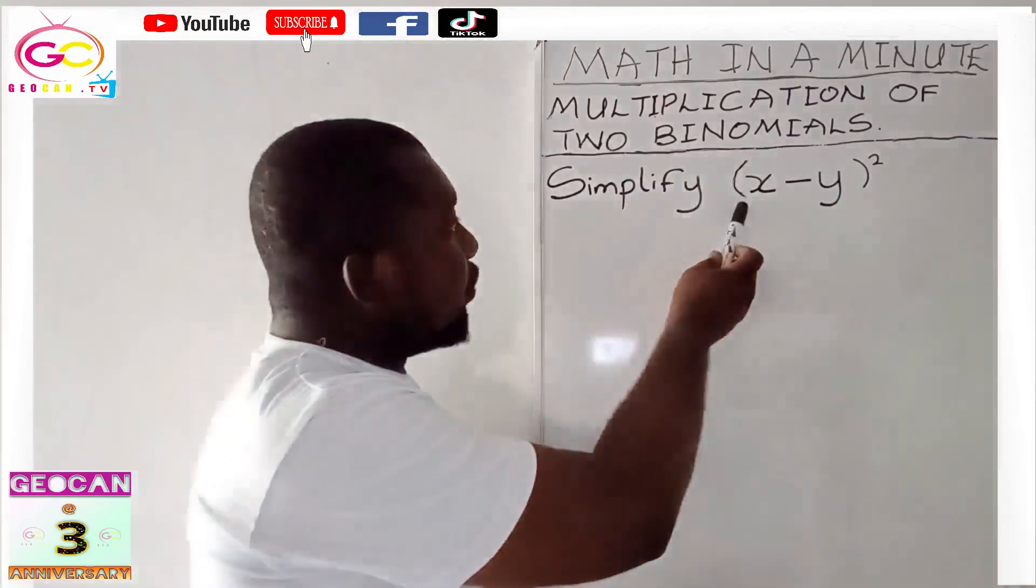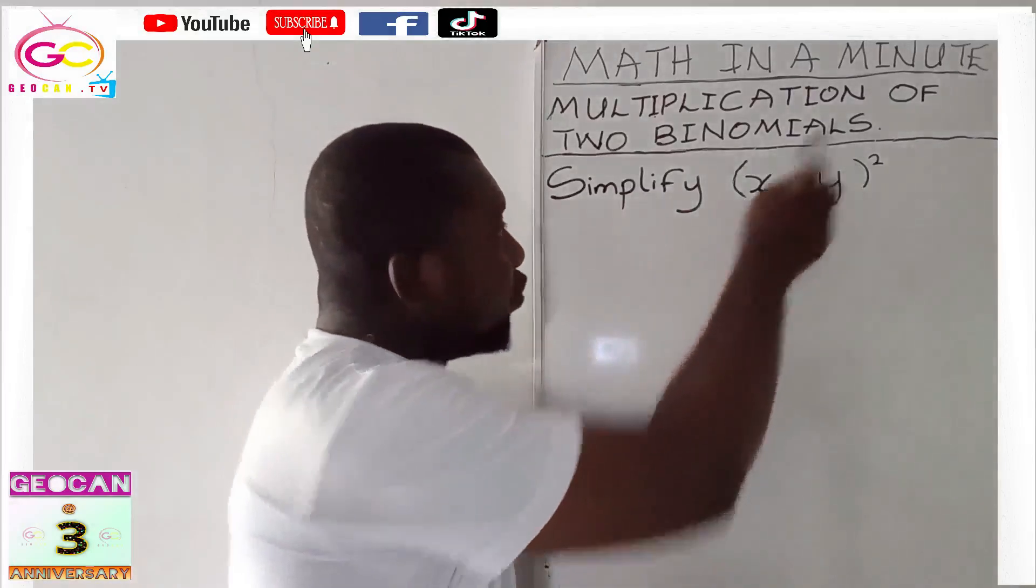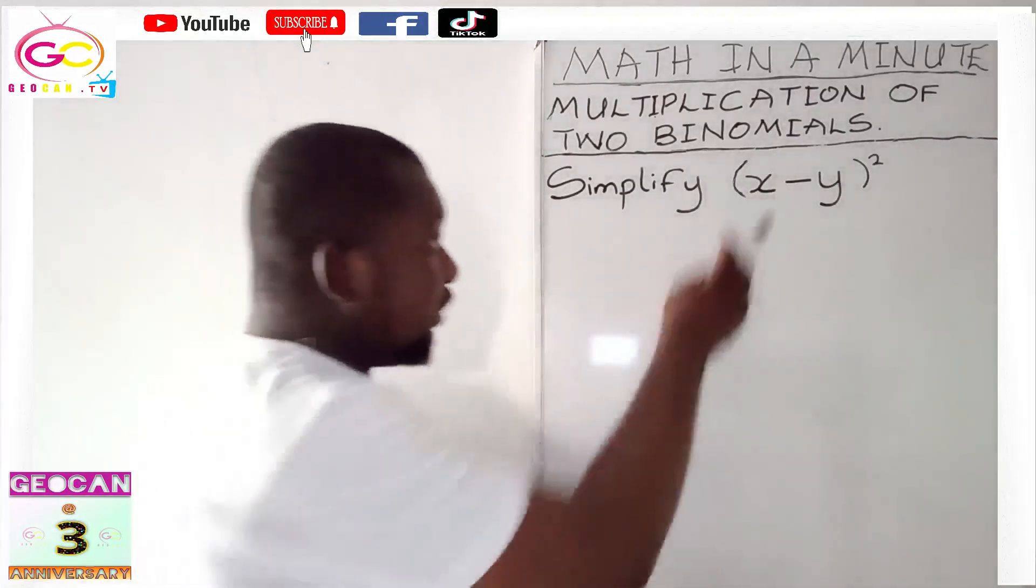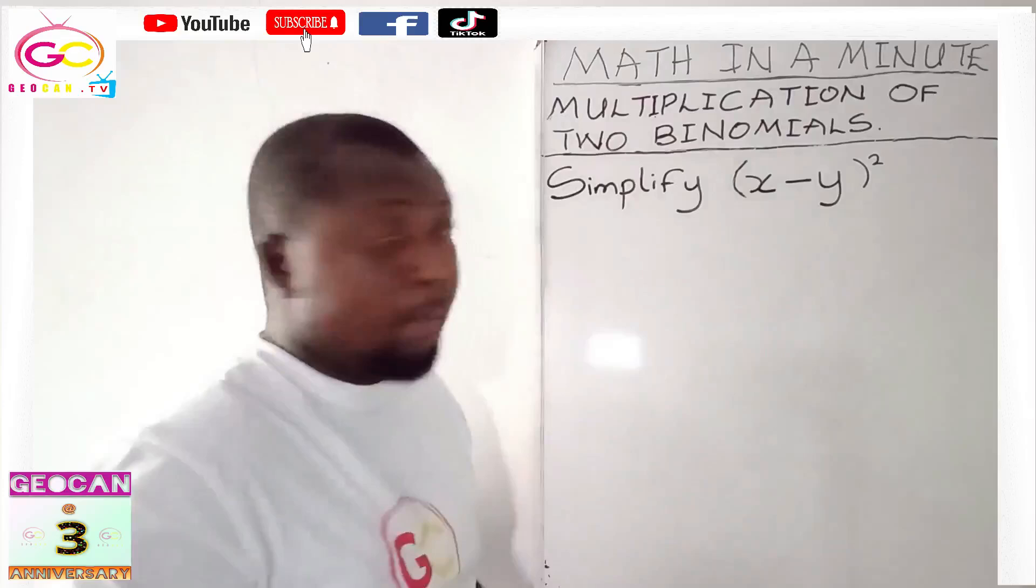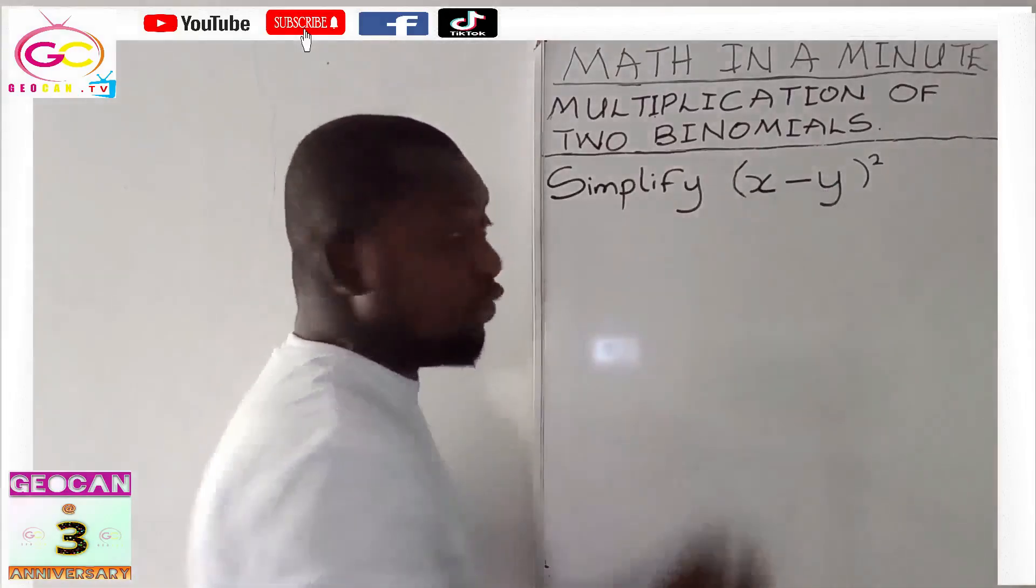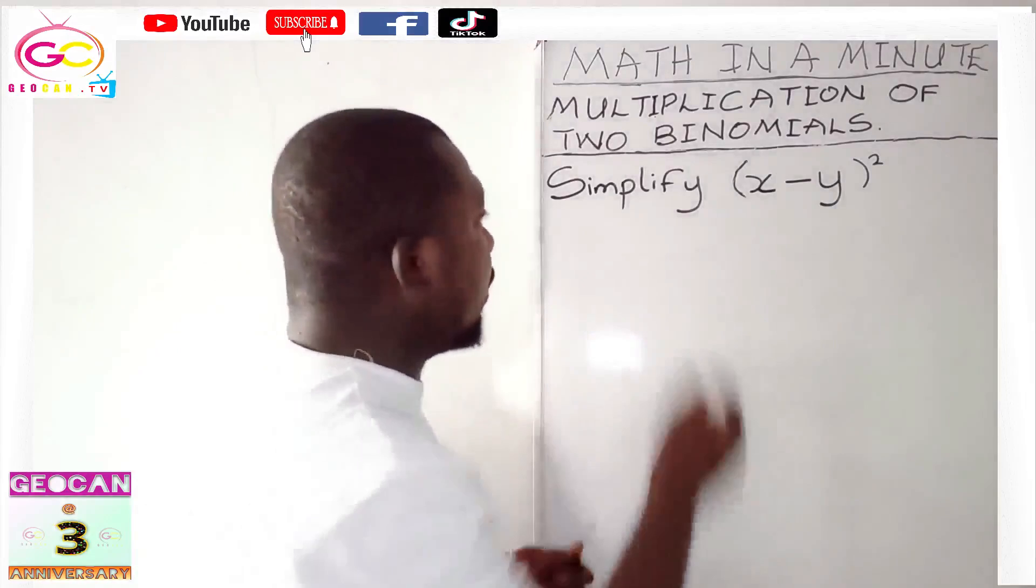What's the first thing it's saying? Simplify (x - y) raised to the power 2. That is, raised to the power 2, meaning you are just multiplying x minus y twice. That is all.